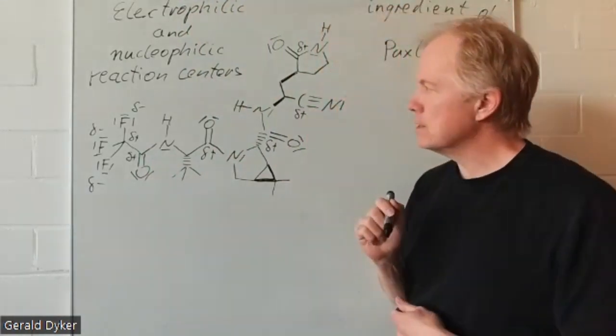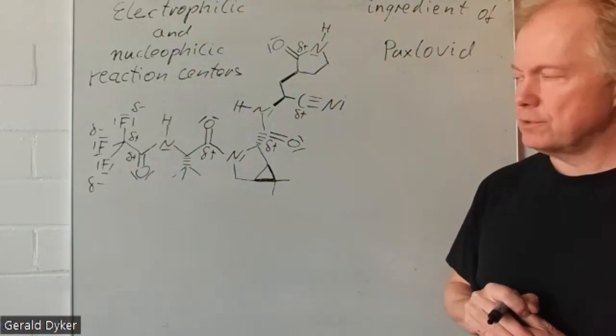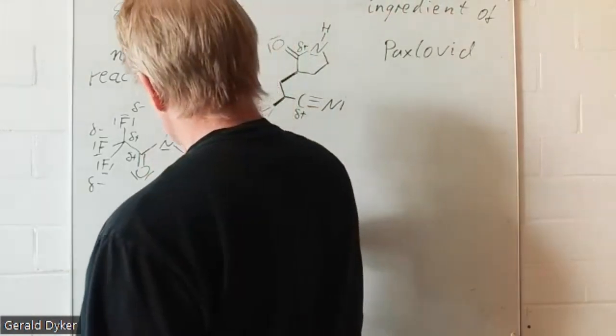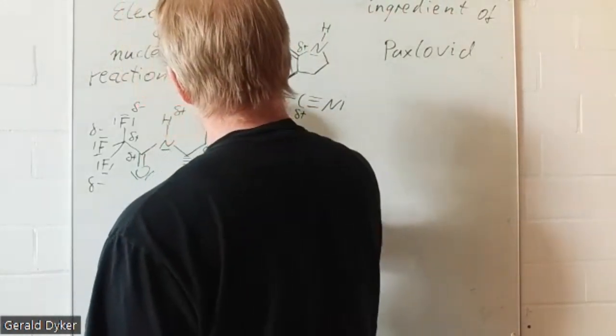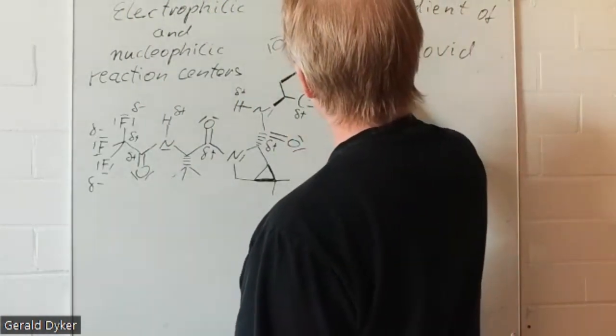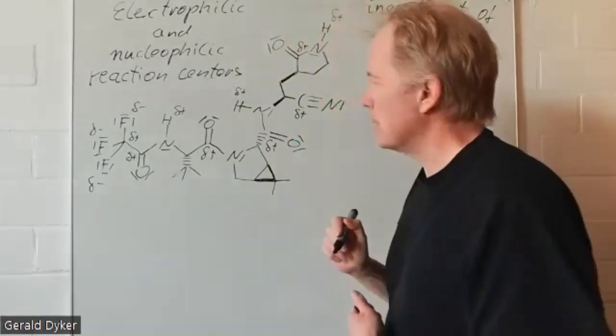Where else do we have electrophilic centers? Well, those acidic hydrogens are delta plus. The hydrogens at the carboxylic acid amides.